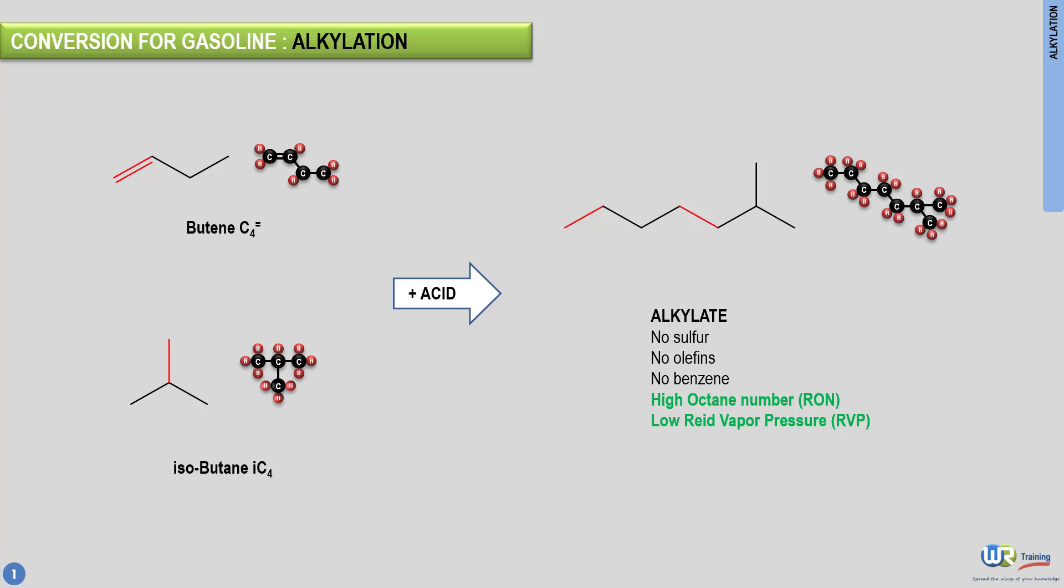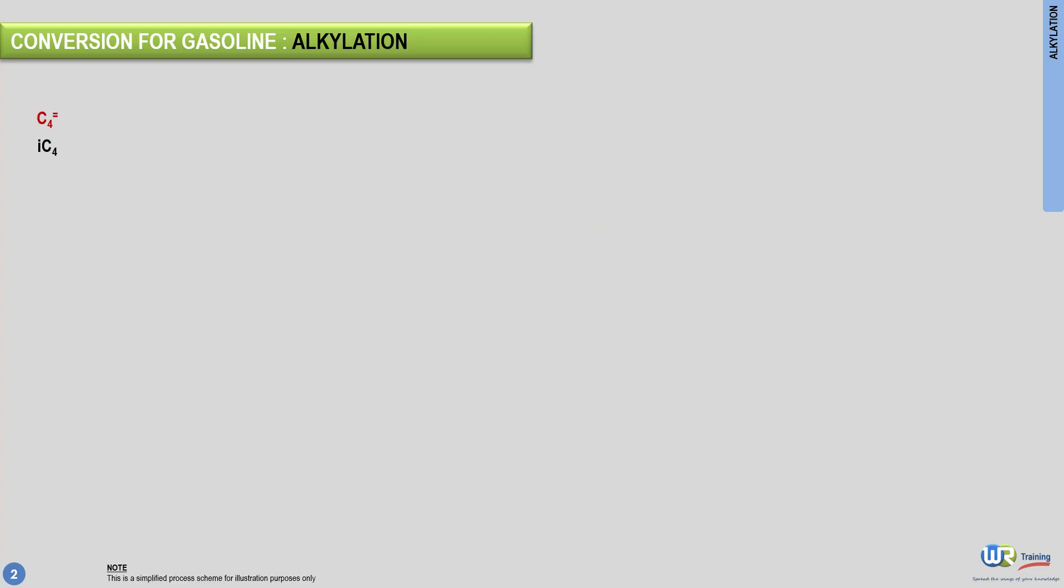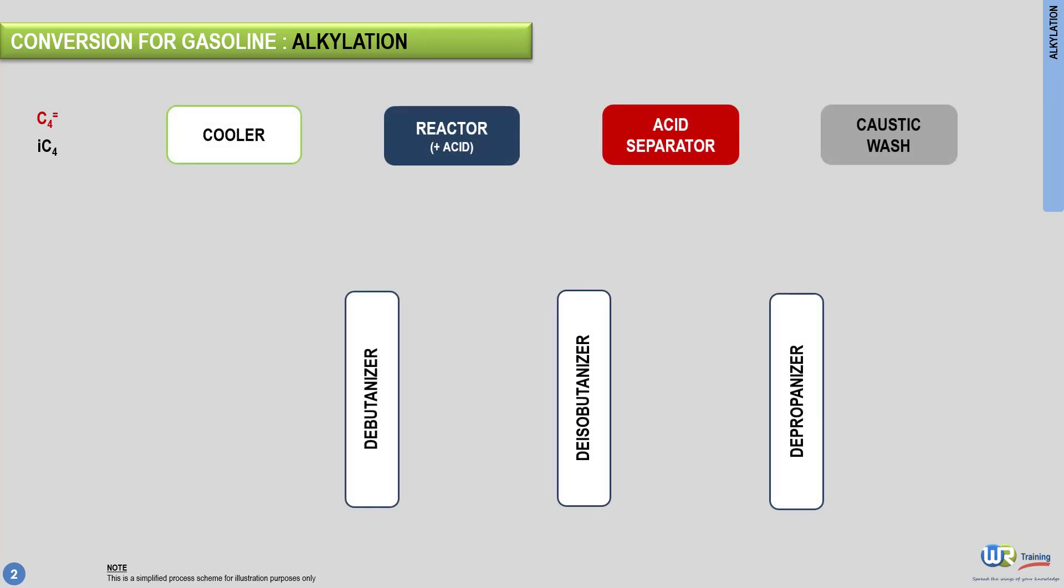A typical refinery alkylation plant consists of seven parts: the cooler, the reactor, the acid separator, the caustic wash, and three distilling columns. The feed, which is a mixture of butene and isobutane, is first mixed with an acid. Refiners use sulfuric acid or hydrofluoric acid as catalyst in liquid form.